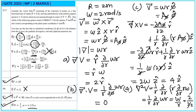So options A, C, and D are correct. These were all the questions from the GATE 2023 paper. If you like this video, please give it a thumbs up and subscribe to my channel for more videos. Keep learning.